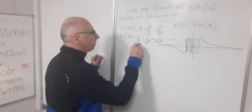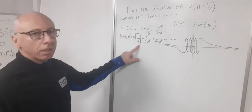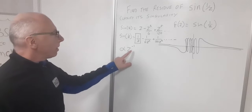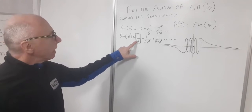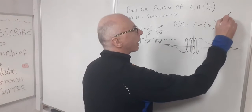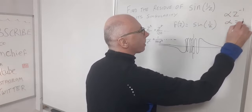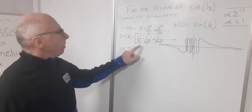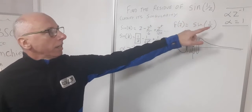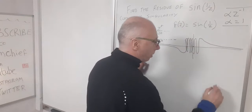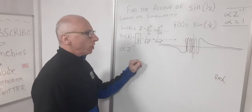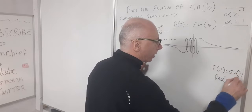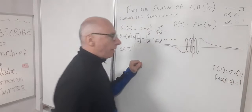The important term in our Laurent series is the one where z has the power of minus one. We are looking for the coefficient alpha of the z to the minus one term. Here we can see that alpha equals one. This is an important value when finding residues. So from the Laurent series, the residue of sin(1/z) at z = 0 equals one.